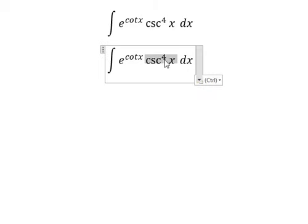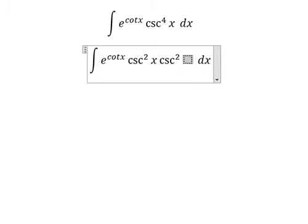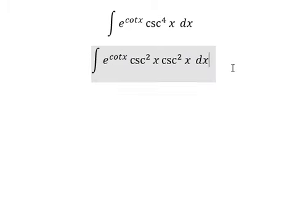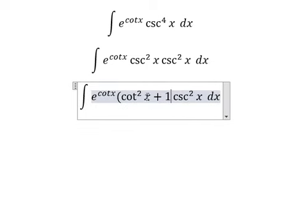Now I will show you how to integrate e to the power of cot x times csc to the power of 4 x. We can write this as csc squared x multiplied by csc squared x. This one we can express as cot squared x plus 1, times csc squared x.